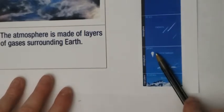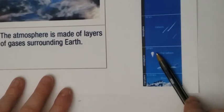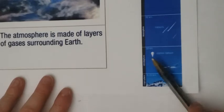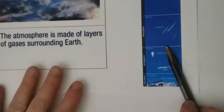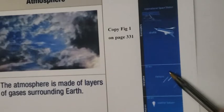The next layer goes all the way up to 50 kilometers, and that's the stratosphere. We have weather stations up here, and planes fly here. The next one is called the mesosphere. The mesosphere is where we see meteors — when you see those falling stars streaking through the sky. That goes all the way up to 85 kilometers.